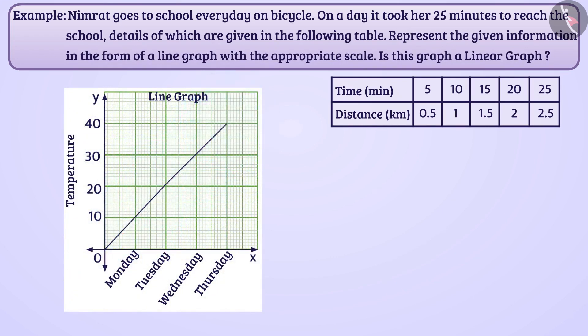Data is displayed by dots or points in the graph. All points are joined by line segments. If all the line segments are part of the same line, then we can say that it is a linear graph.